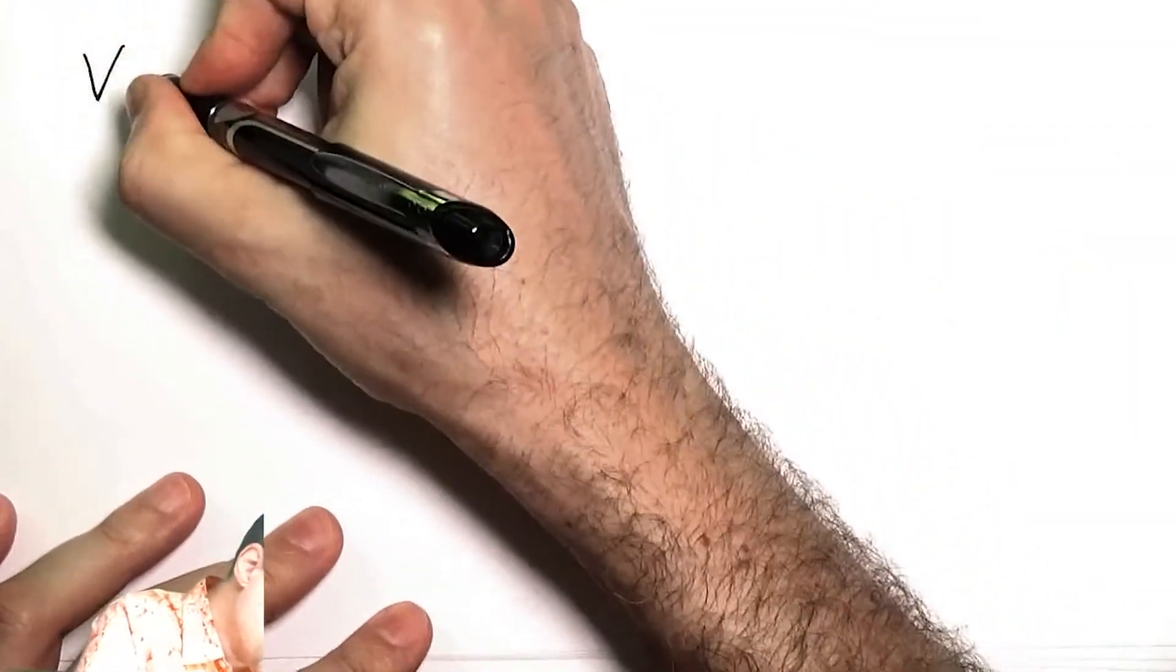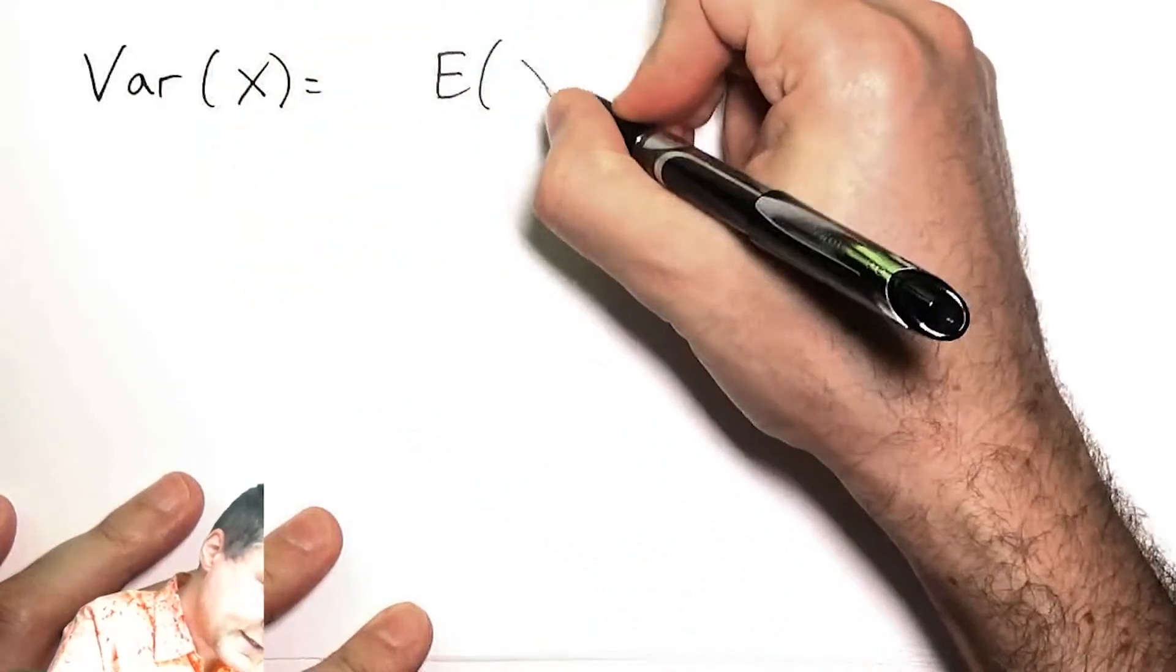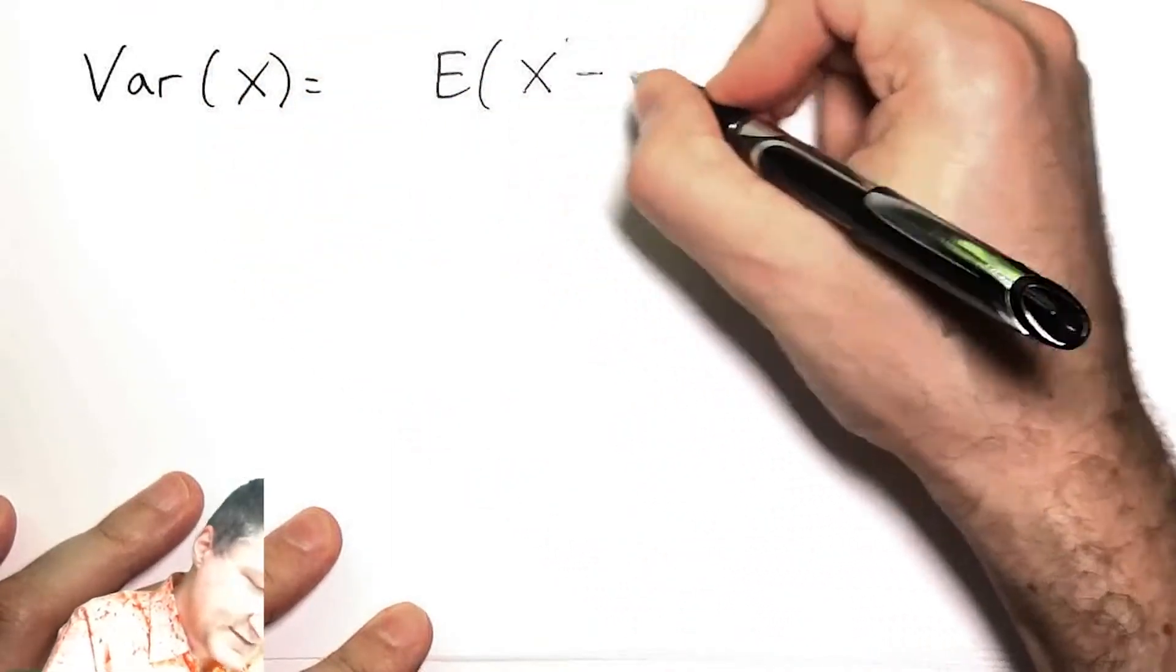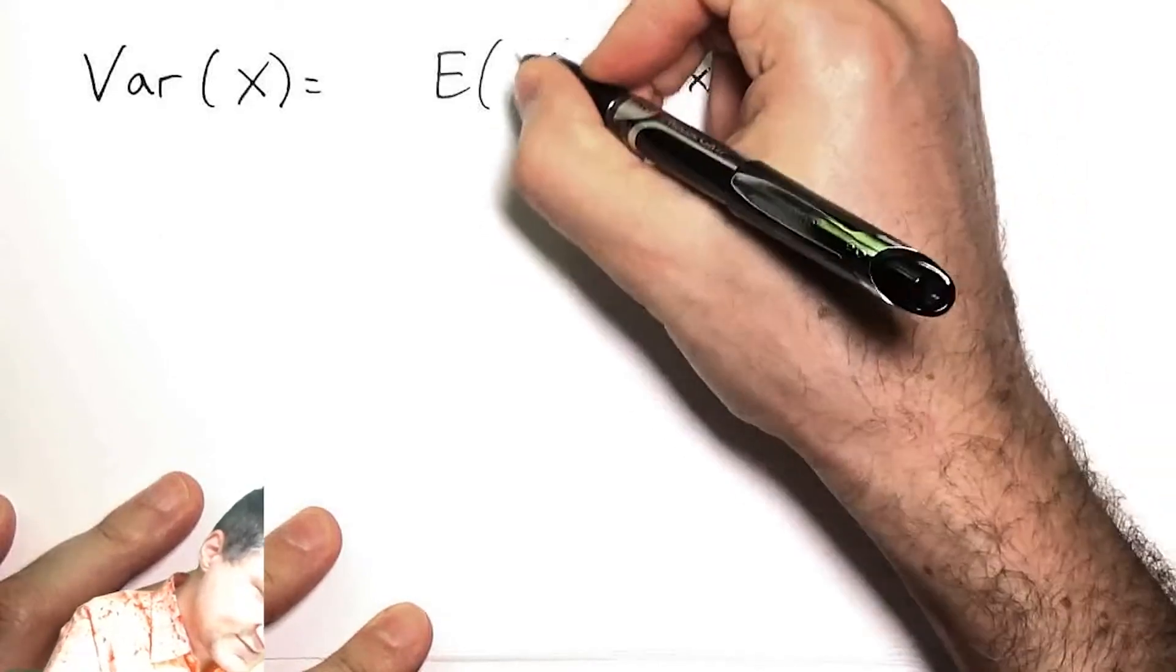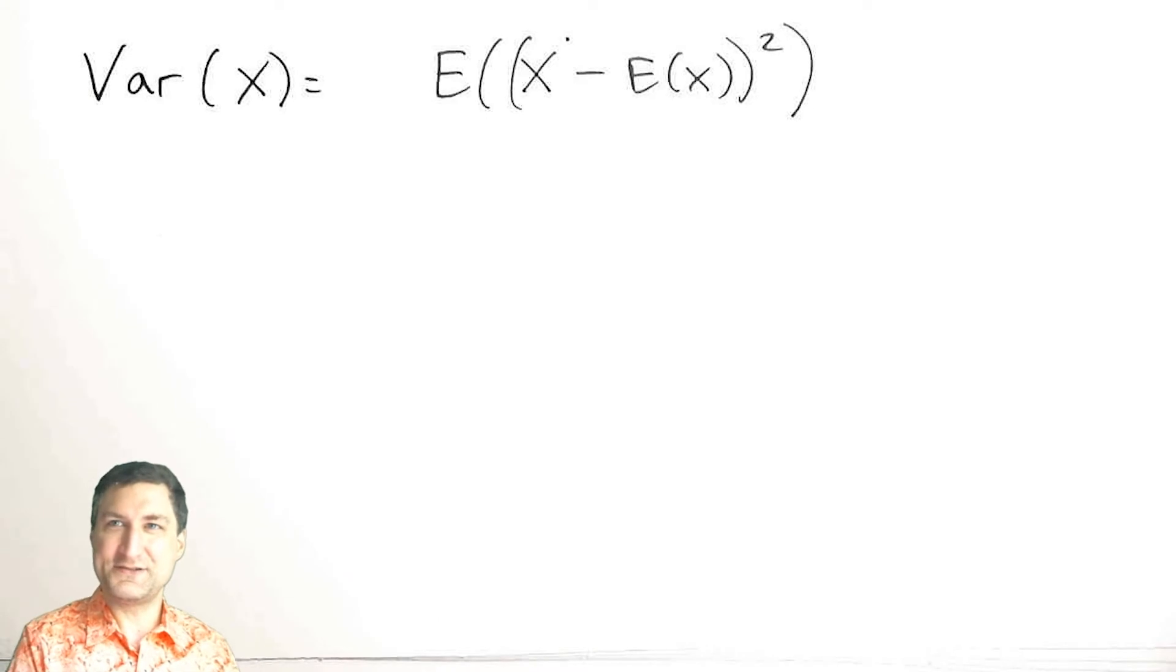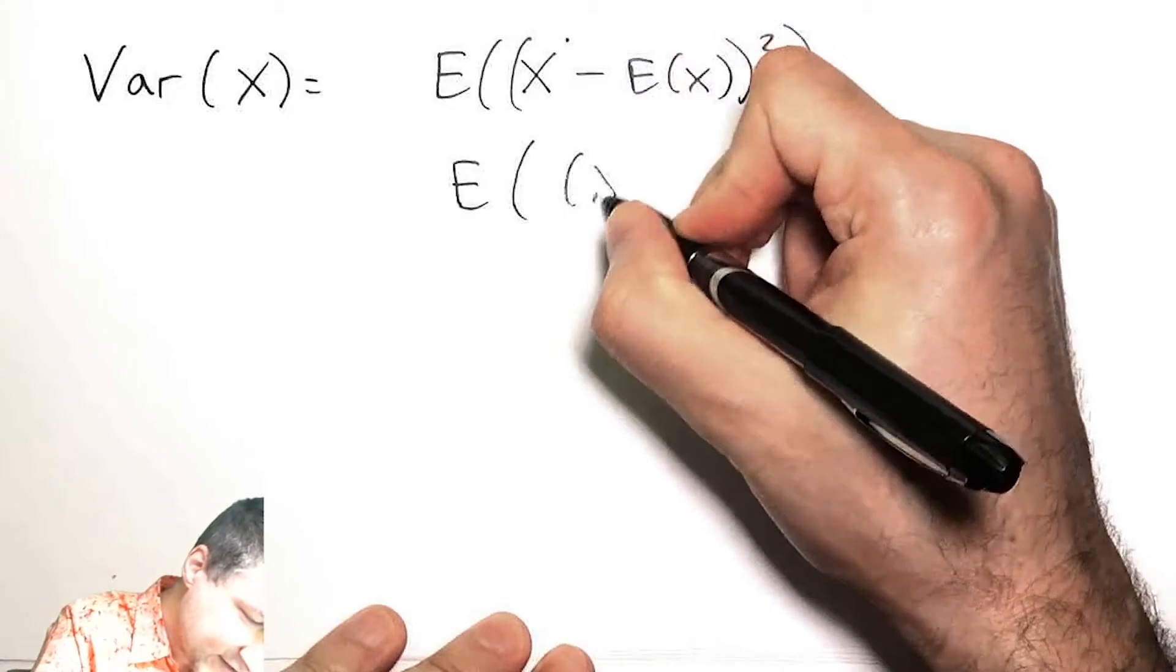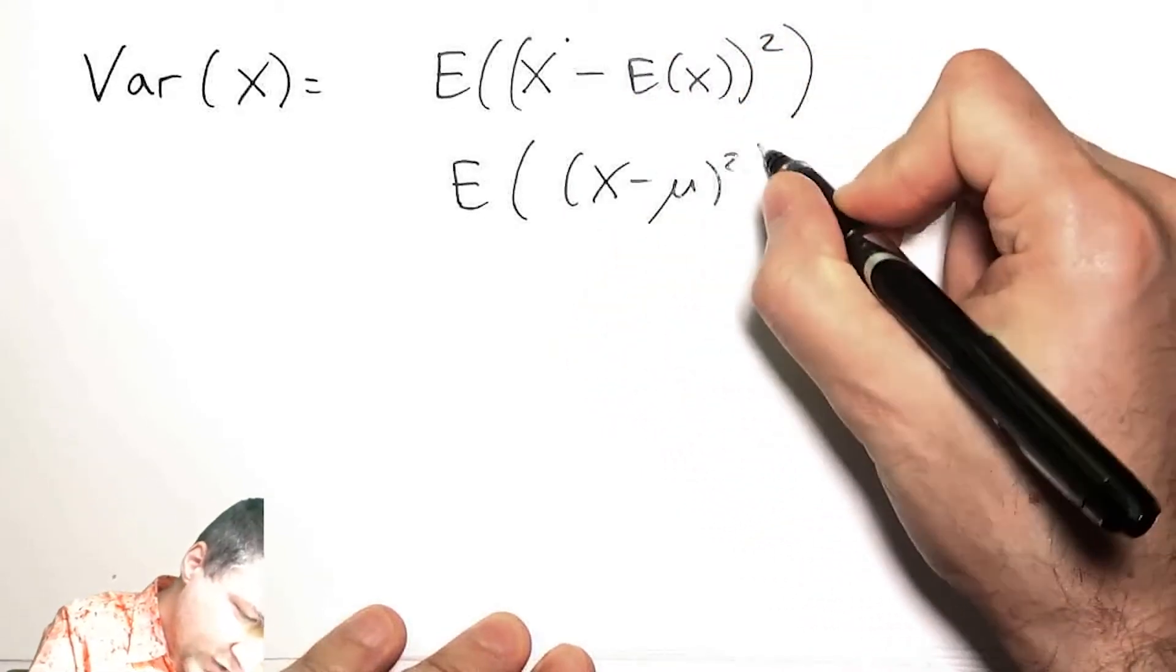It's called Var(X), and it's defined as the expected value of (X minus the expected value of X) squared. A little confusing to have this double E(X), but this is actually not that confusing if we write it like this.